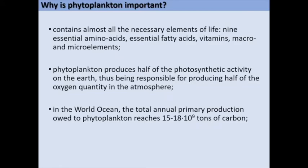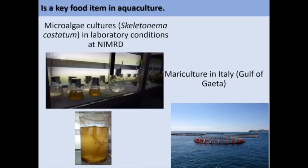Regarding phytoplankton importance: phytoplankton contains almost all necessary elements for life — 9 essential amino acids, essential fatty acids, vitamins, and macro and micro elements. Phytoplankton produces half of the photosynthetic activity on Earth, thus being responsible for producing half of the oxygen in the atmosphere. In the world ocean, the total annual primary production owed to phytoplankton reaches billions of tons of carbohydrates. Phytoplankton is key in aquaculture and mariculture, both using microalgae for feeding. In mariculture, phytoplankton occurs naturally within the normal circulation of water, whereas in aquaculture it must be obtained and introduced directly.